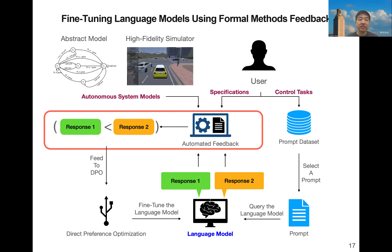Based on this comparison, we are able to get a reward signal, which is a preference input to the DPO algorithm, and then we use this to fine-tune the language model.